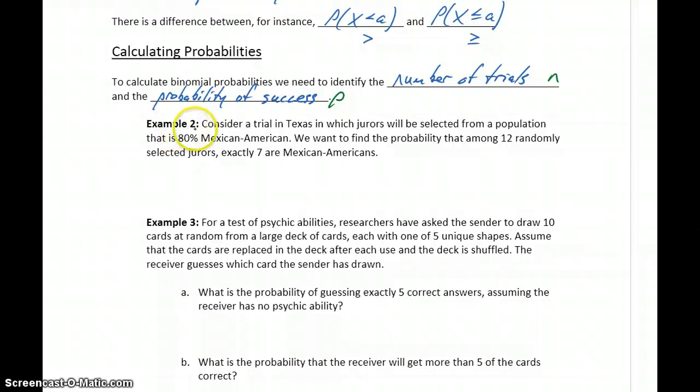In our first example, or example two, consider a trial in Texas in which jurors will be selected from a population that's 80% Mexican American. We want to find the probability that among 12 randomly selected jurors, there are exactly seven Mexican Americans.